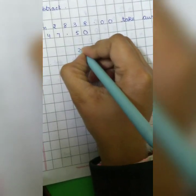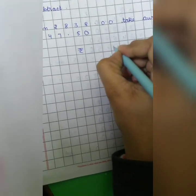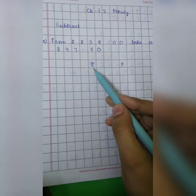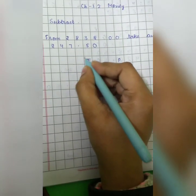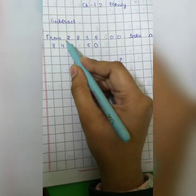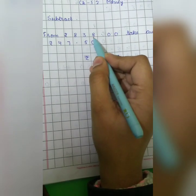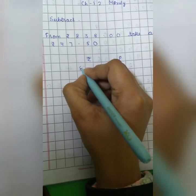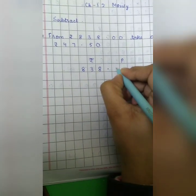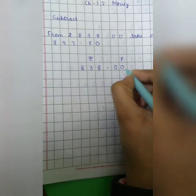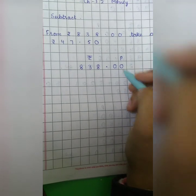So what we are going to do, like we did in addition we will make two columns. One for rupees and one for paise. And then we will write down rupees from 838 rupees we have to subtract. So 838 under rupees 0.00. 0.00 will be under paise.